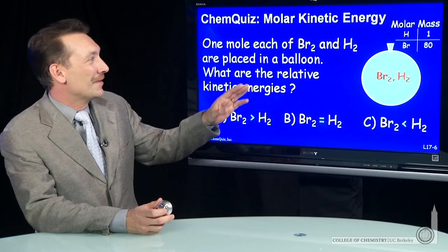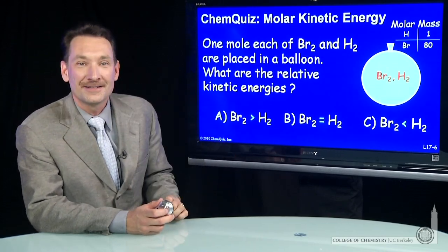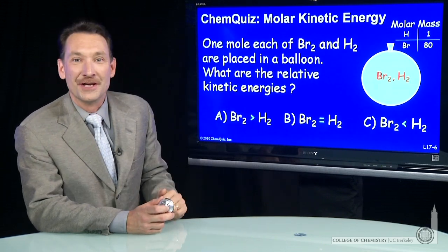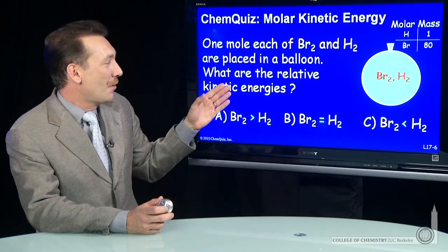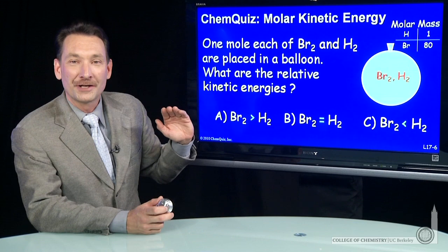Let's look at two gases mixed in a balloon. I'll take bromine and hydrogen gas. Their relative masses are shown here. And I'd like to know, what are their average molar kinetic energies?